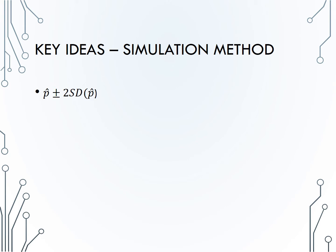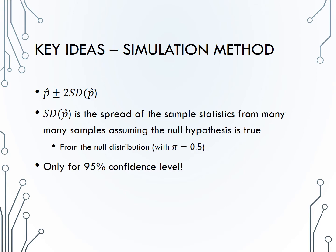The formula is to take our sample proportion, p-hat, and then add and subtract 2 times the standard deviation of p-hat. Recall that the standard deviation of p-hat is the spread of the sample statistics from many, many samples. We can obtain this value through simulation from our null hypothesized distribution, which assumes the null is true.